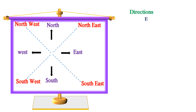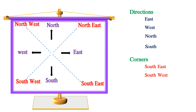Directions are four. They are East, West, North and South. Similarly, we have four corners. They are South-East, South-West, North-West and North-East.